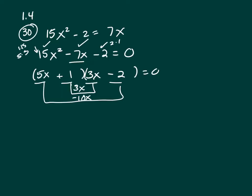So you have two factors equal to 0. And the only way that can happen is if 5x plus 1 equals 0 or 3x minus 2 equals 0.